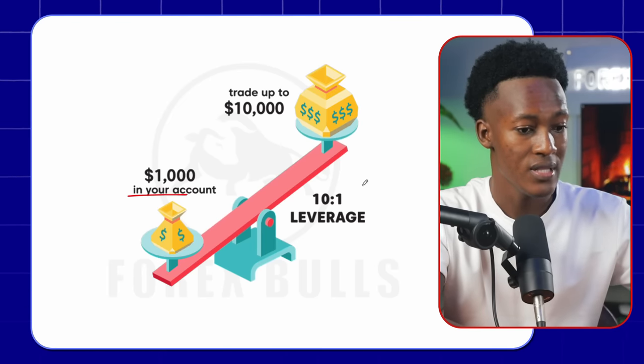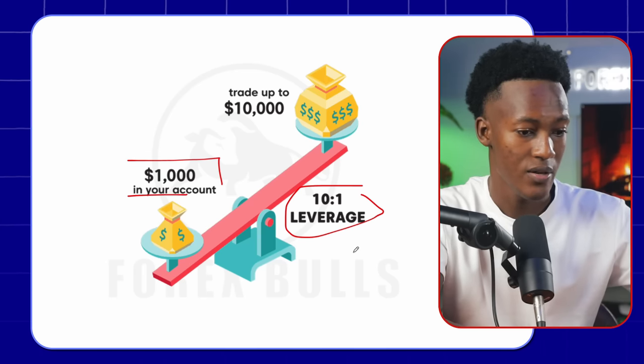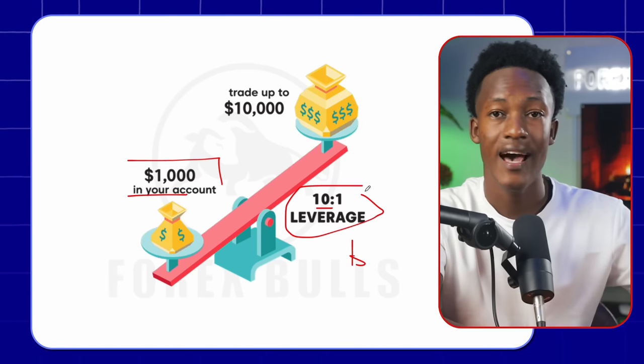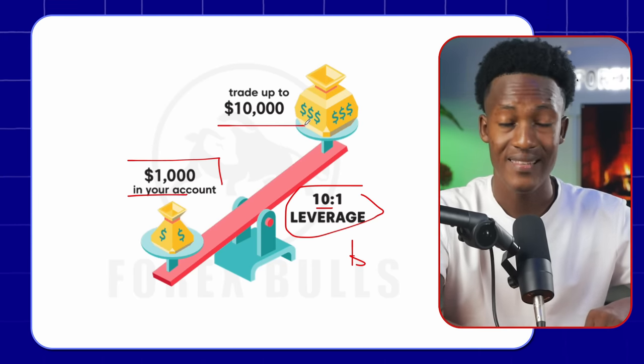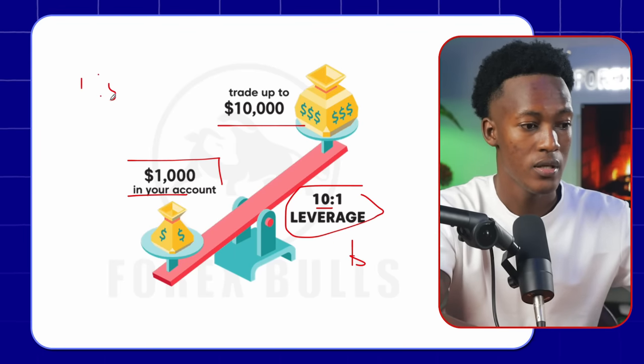Say your account is $1,000 and you use a leverage of 10 to 1. The broker takes your trading capital of $1,000 times your leverage of 10, meaning you can trade with about $10,000. Something important: the bigger the leverage, the bigger the risk exposure. For example, if you're trading on $100 with a leverage of 1 to 500, you get $100 times 500, giving you buying power of up to $50,000. You'd be tempted to open bigger positions, but in actual sense you are only trading with $100. So it's better to use just a moderate leverage — not too big, not too small.